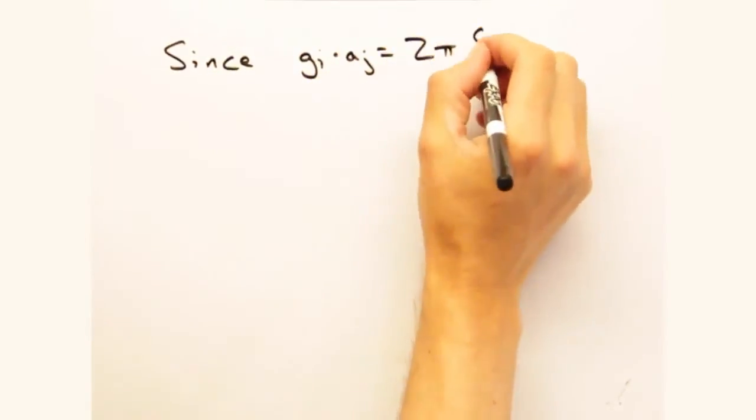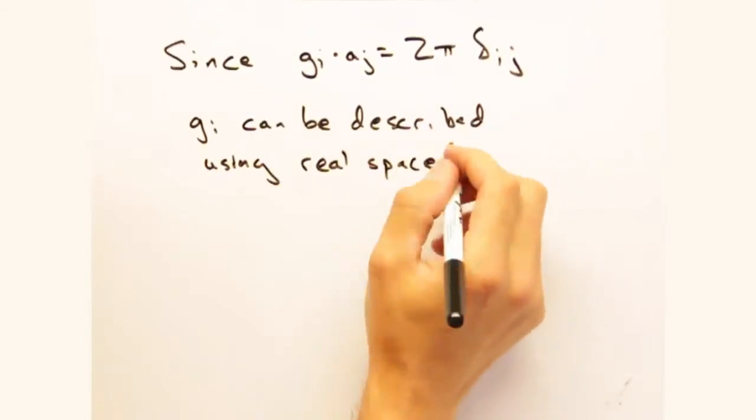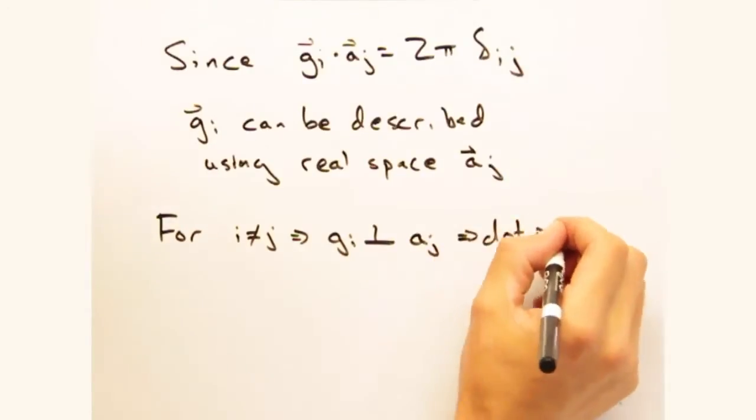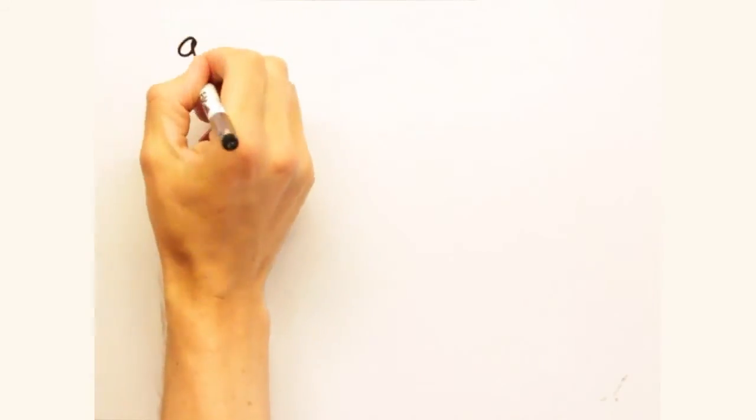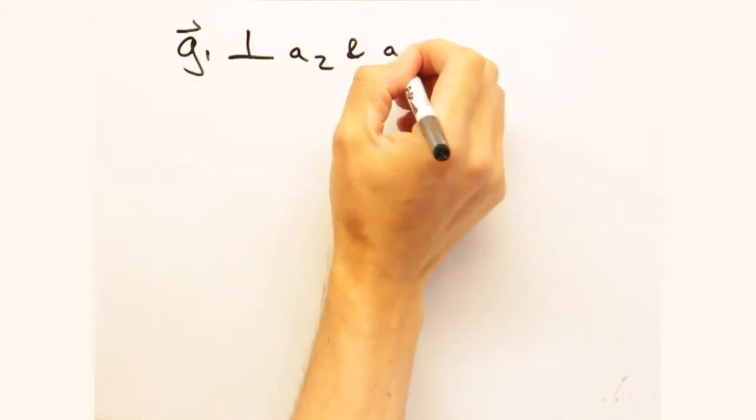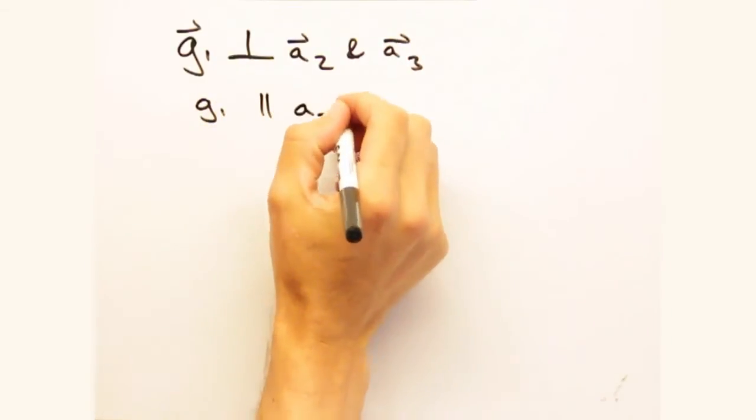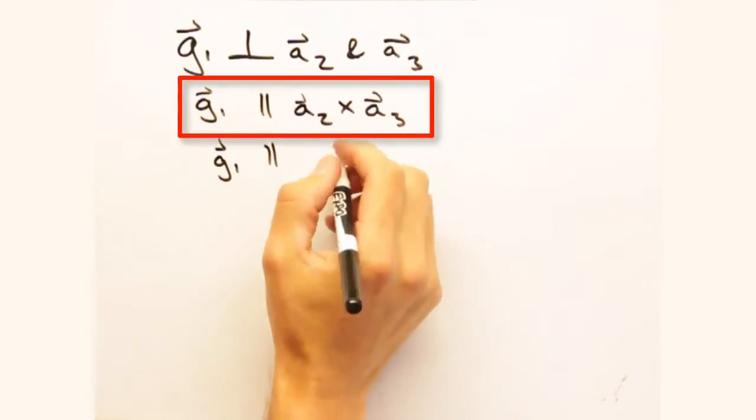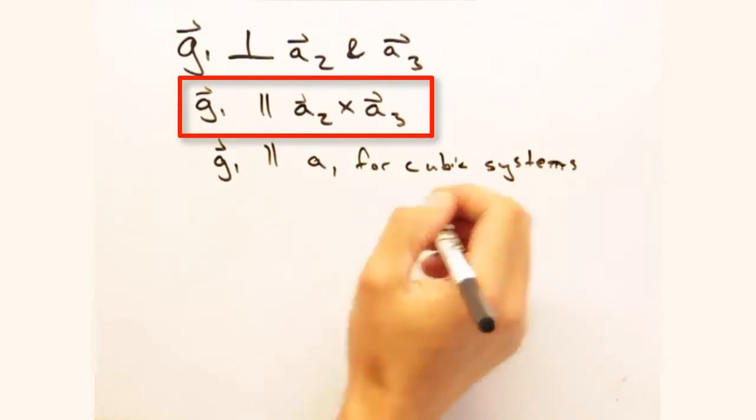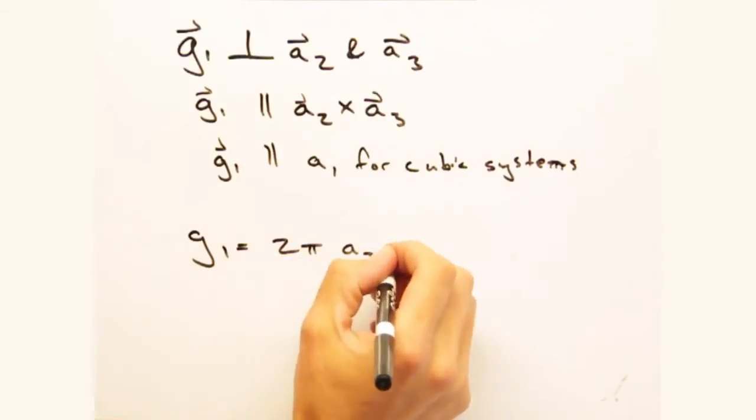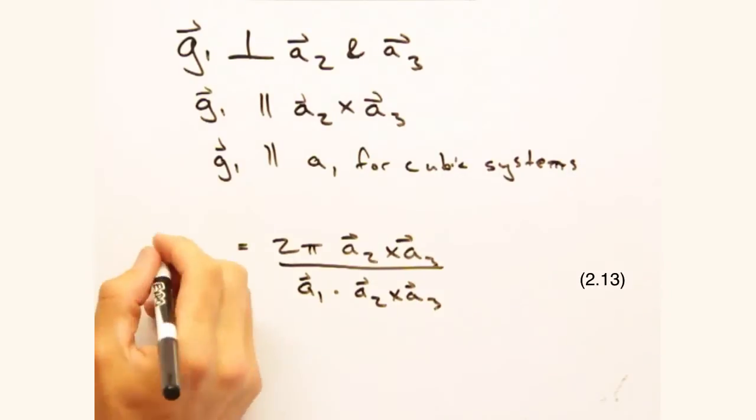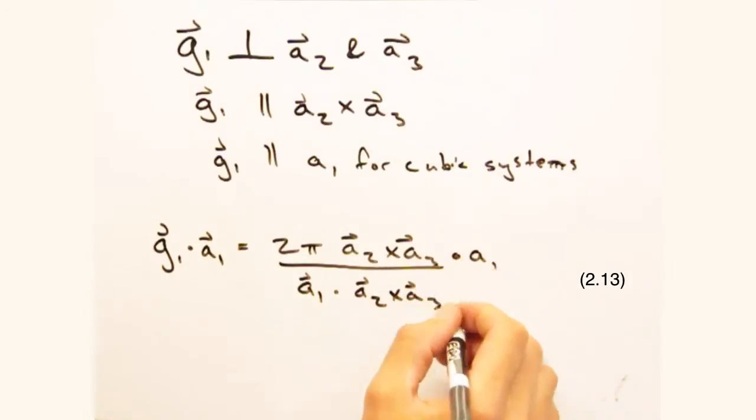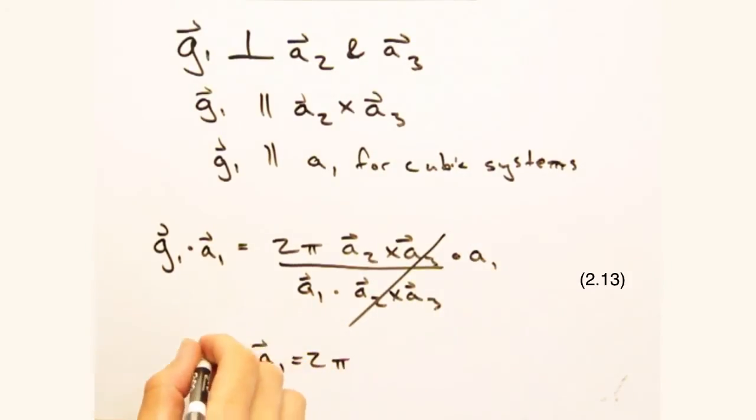And with that g dot a constraint, we can determine our g vectors in terms of our real space lattice vectors. Because g sub i dot a sub j is always zero, we know that g1 is perpendicular to a2 and to a3, and so should point in the direction of a1. Not quite. That's only true for cubic systems. More generally, we should think of g1 pointing in the direction of a2 cross a3, which may or may not be parallel to a1. Combining this with a scaling factor of two pi over the volume of our cell, and we get the following expression for g1. g2 and g3 can be obtained similarly, except the subscripts in the cross product are different. And we can see that we've satisfied our original g sub j dot a sub i condition, because if I take g1 and dot it with a1, I get back two pi.